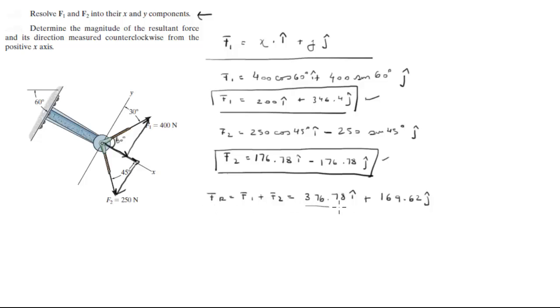Now we're going to convert this into polar, so you know that the magnitude is equal to the square root of X squared plus Y squared. So it's going to be 376.78 squared plus 169.62 squared, all square rooted, and when you do this you're going to get that the magnitude is 413.2. Now for the angle theta that it forms, all you got to do is the tangent inverse of the Y component over the X component, 169.62 over 376.78, and when you do that you're going to get that theta is equal to 24.24 degrees.